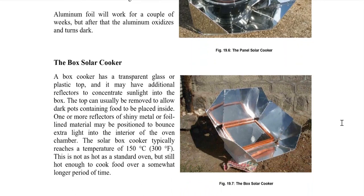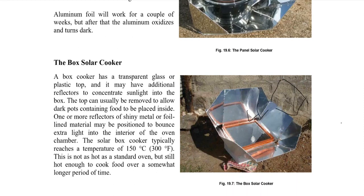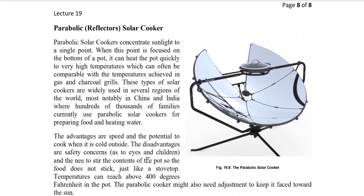The box solar cooker has a transparent glass or plastic top and may have additional reflectors to concentrate sunlight into the box. The top can be removed to place dark food containers inside. The solar box cooker typically reaches temperatures of around 150 degrees Celsius or 300 degrees Fahrenheit — not as hot as a conventional oven, but hot enough to cook food over a longer time.